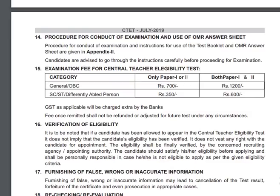The application fees for paper one is 700 rupees. If you want to attempt both paper one and paper two, it is 1200 rupees. For SC/ST category, it is 350 rupees for one paper. If you want to give both papers, it is 600 rupees.